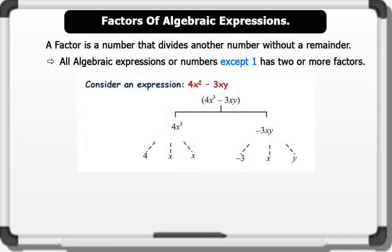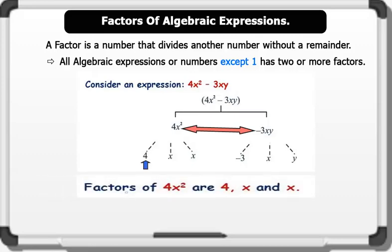For example, let's consider the expression 4x squared minus 3xy. The expression is split into two, where we have 4x squared and minus 3xy. The factors of 4x squared are 4, x, and x.